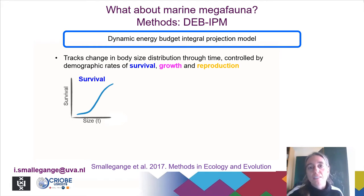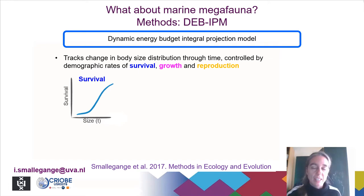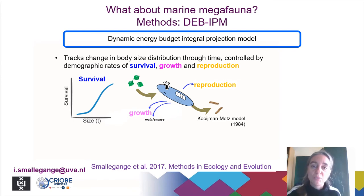So what is a dynamic energy budget integral projection model? It is a demographic model that tracks the changes in body size distribution through time. These changes are controlled by the demographic rates of survival, growth, and reproduction. Survival is described as follows: individuals of very small size, typically the juveniles, have fairly low survival, whereas larger individuals, typically the adults, have high survival rates. Growth and reproduction is described by the Kooijman-MADS model, an energy budget model that takes the trade-off between energy invested in growth and reproduction into account.